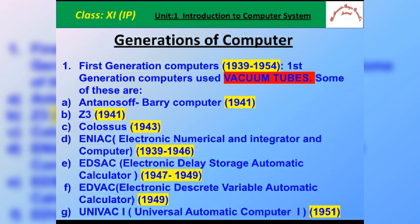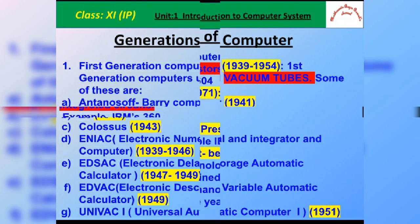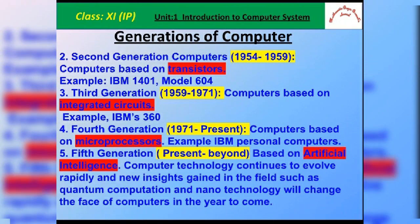EDVAC, the Electronic Discrete Variable Automatic Computer, developed by John Mauchly and J. Presper Eckert, was the successor of ENIAC. Remember these names, as they commonly appear in fill-in-the-blank, one-mark, or multiple-choice questions in exams. UNIVAC 1, the Universal Automatic Computer 1, was one of the first commercially available computers — UNIVAC 1 is the first commercial computer.